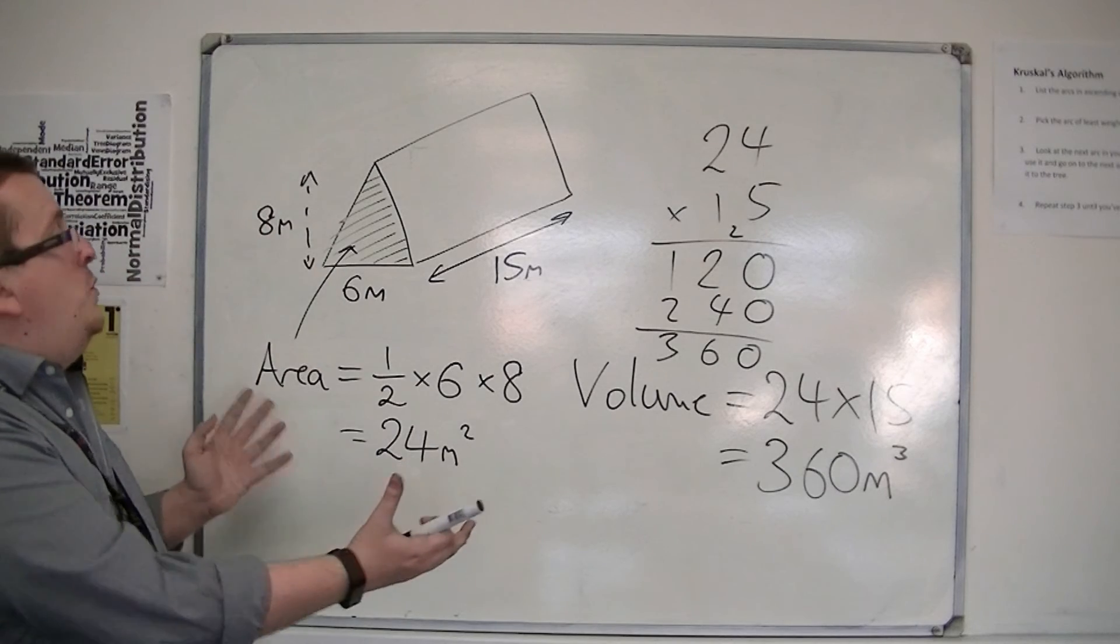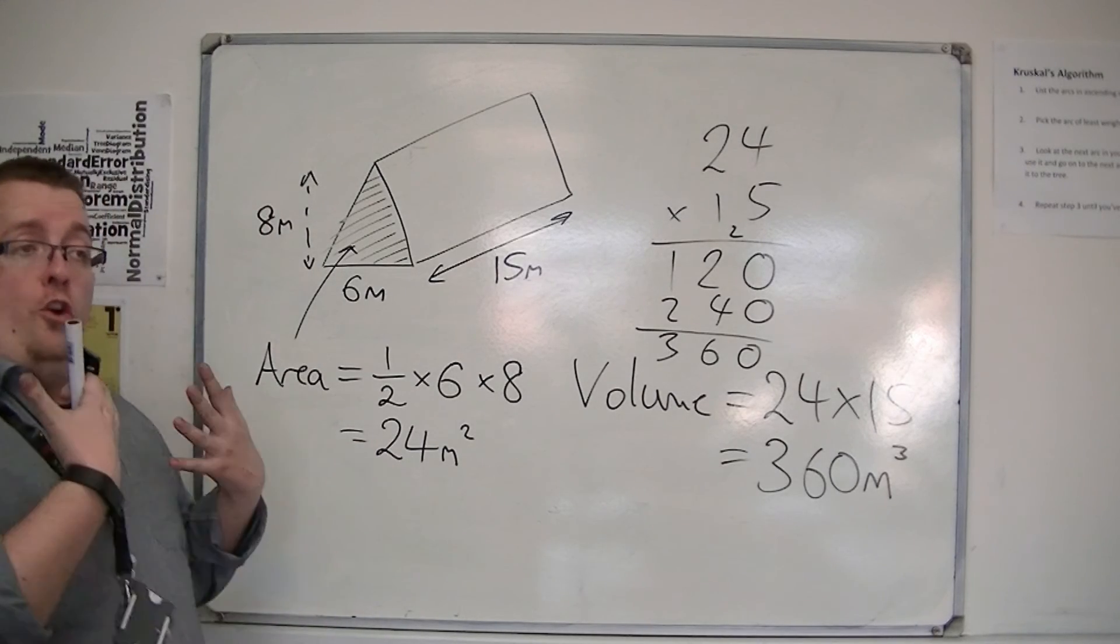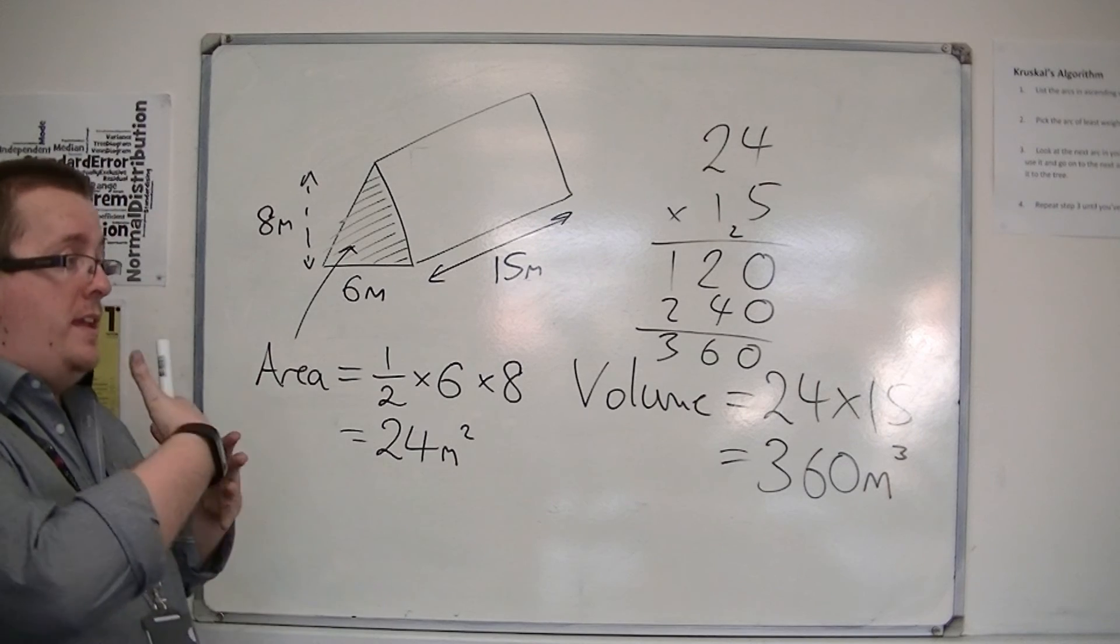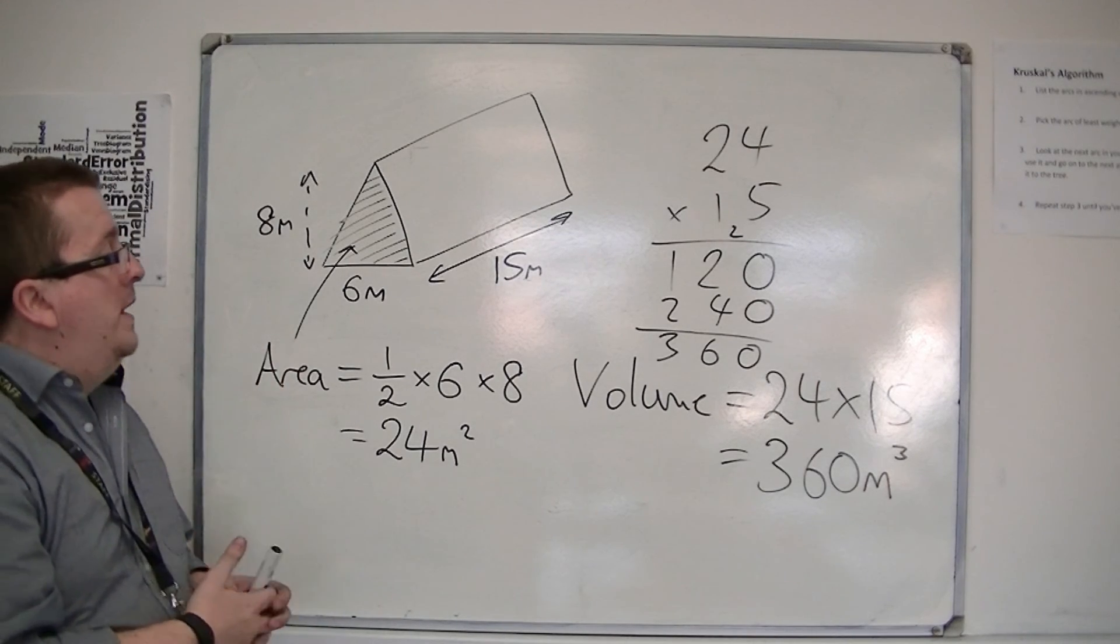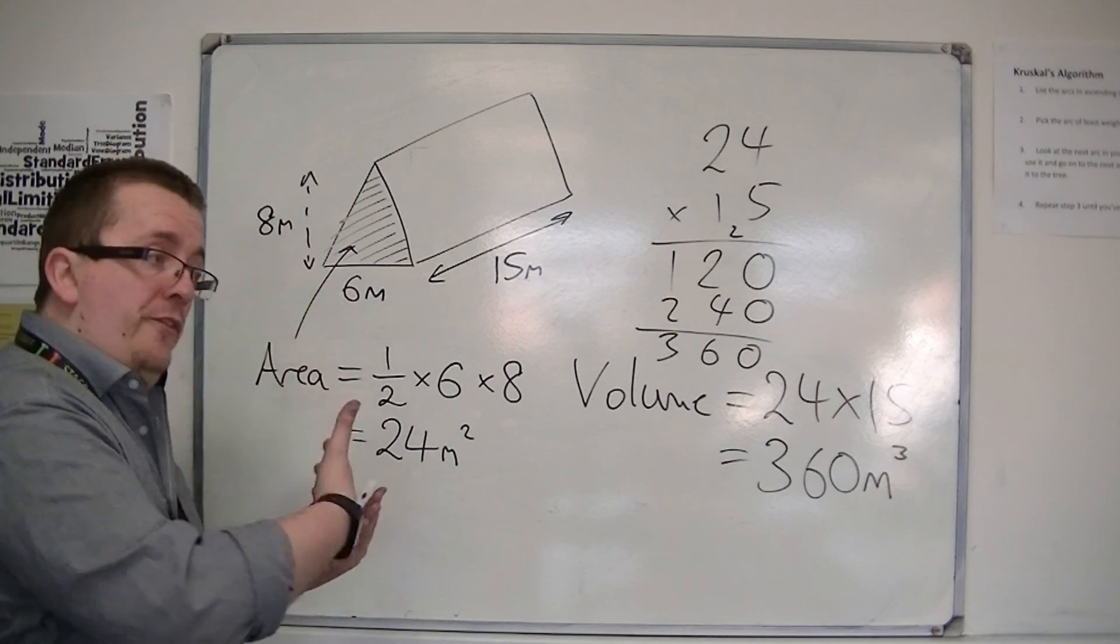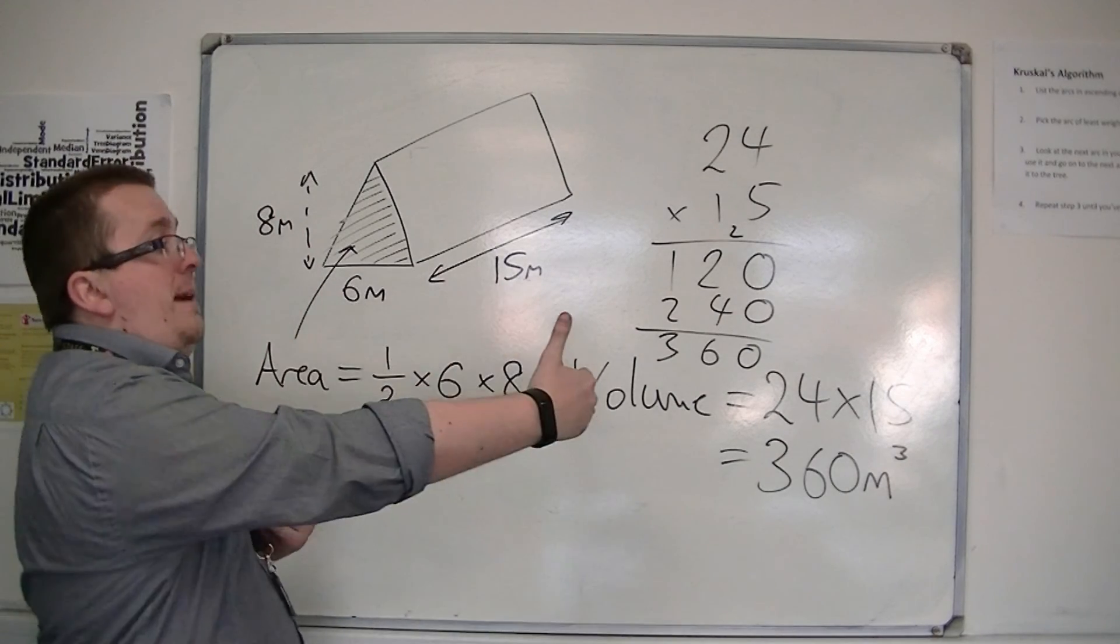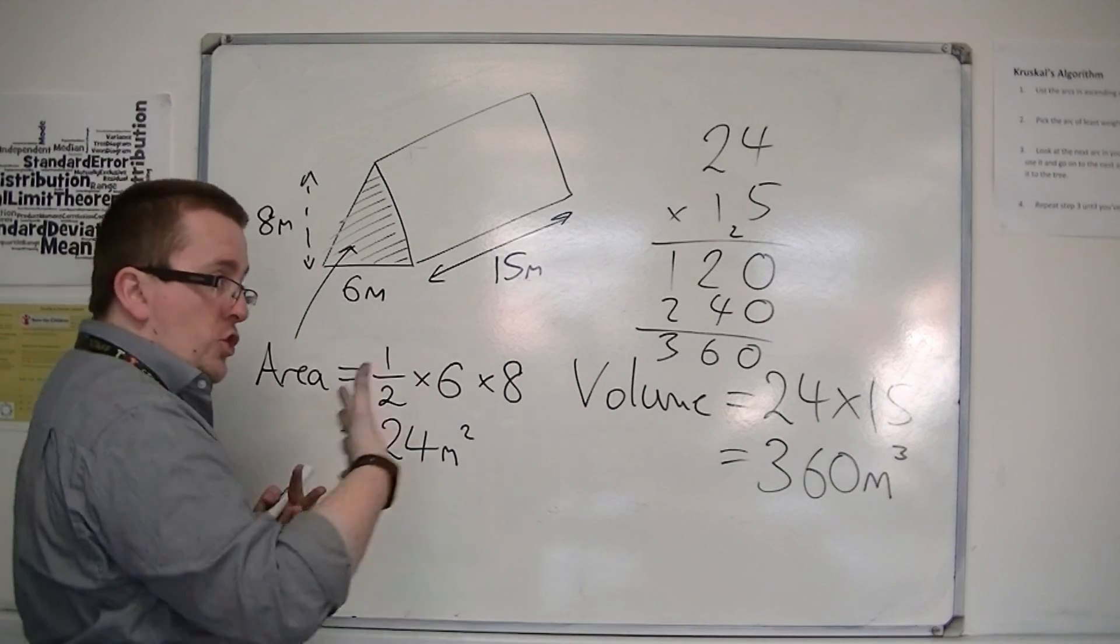So there you are. That is how we can work out the volume of a given shape of a prism, in this case a triangular prism. But if you know the front face area and you know the depth of the shape, and it's a continuous shape all the way through, then you can work out its volume very easily.